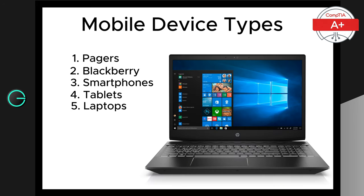Now let's talk about laptops. Laptops are portable computers that come in various types to suit different needs, ranging from lightweight ultra portables to powerful gaming machines. Some common types include ultra portable laptops, which are lightweight and slim, perfect for on-the-go use — for example the Dell XPS 13. Gaming laptops are high performance laptops designed for gaming, such as the MSI GS75 Stealth. Two-in-one convertibles can also be used as tablets, like the Microsoft Surface Pro.